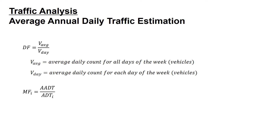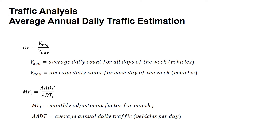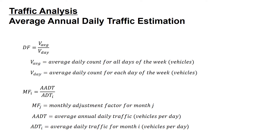For the monthly factor, MF sub J is equal to the AADT divided by ADT sub I, where MF sub J is the monthly adjustment factor for month J. AADT is the average annual daily traffic in vehicles per day, and ADT sub I is the average daily traffic for month I in vehicles per day.